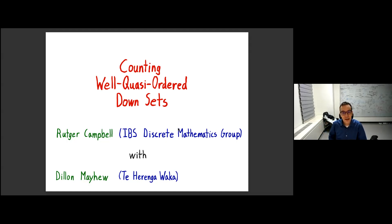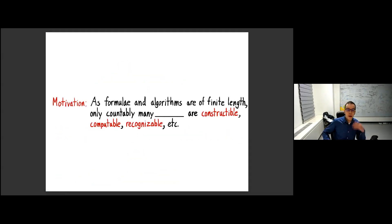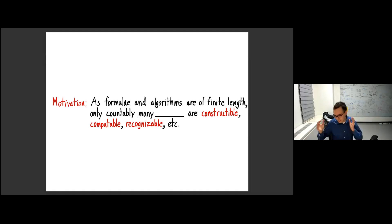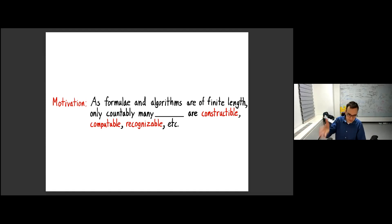When I say counting, we care about the cardinality of things, and whether it's countable or not. The reason we'd care about whether or not something's countable is because all formulae and algorithms are finite length. So we can only do constructable, computable, recognizable things with countably many of whatever object. For instance, you can construct all of the rationals, but there are some reals that aren't because there are just too many reals. That's why countability is something worth looking at.